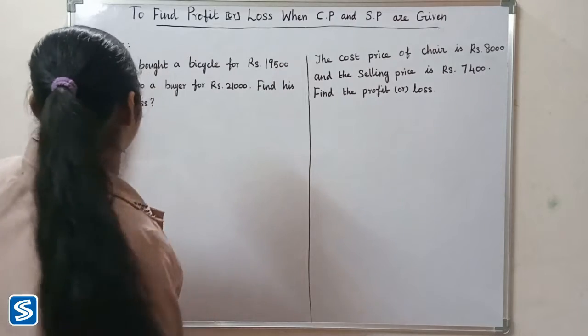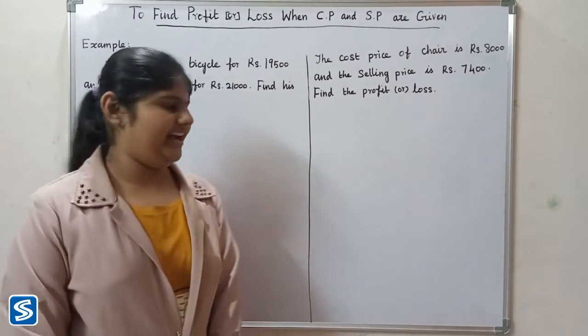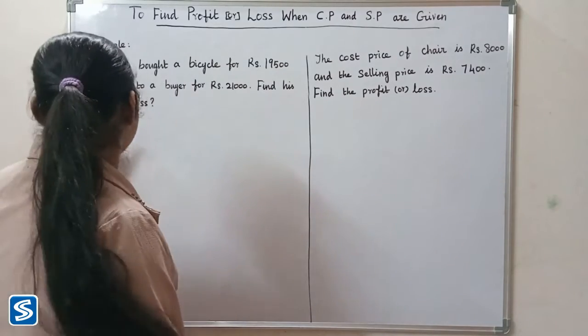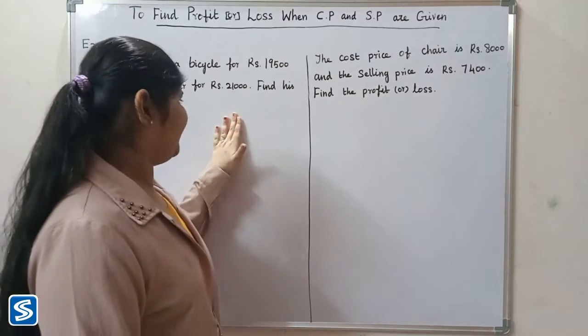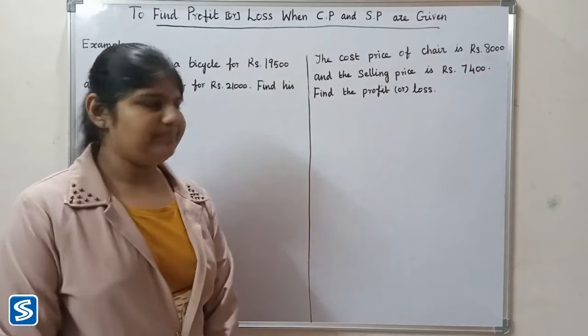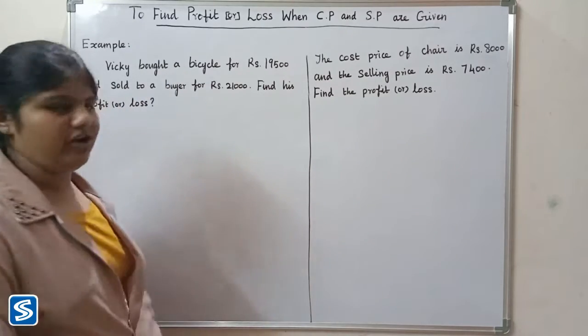For example: Vicky bought a bicycle for rupees 19,500 and sold it to a buyer for rupees 21,000. Find his profit or loss.